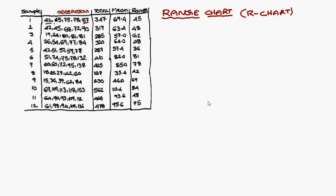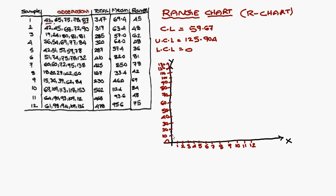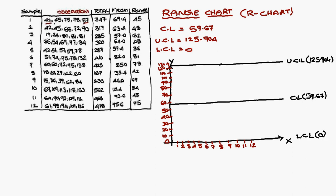Similarly, for the R chart: control line is 59.67, upper control line is 125.90, and lower control line is 0. On the X-axis place the samples; on the Y-axis place the range values — not the mean. Plotting the range values for samples 1 (45), 2 (48), 3 (62), 4 (48), and so on, all range values lie between the upper and lower control lines. Therefore, the process is under control for the R chart.